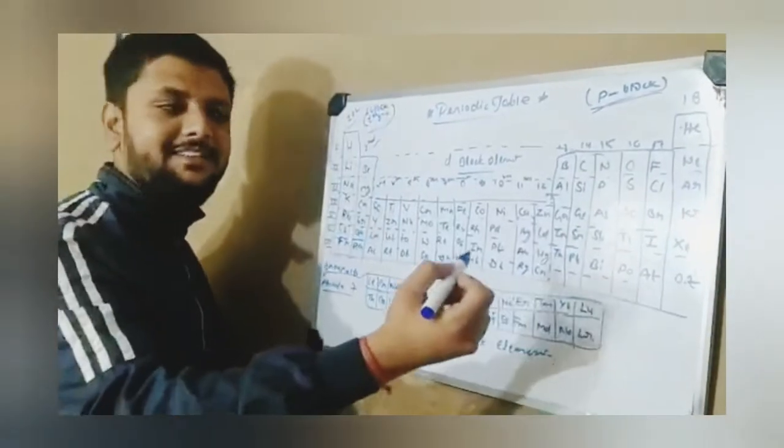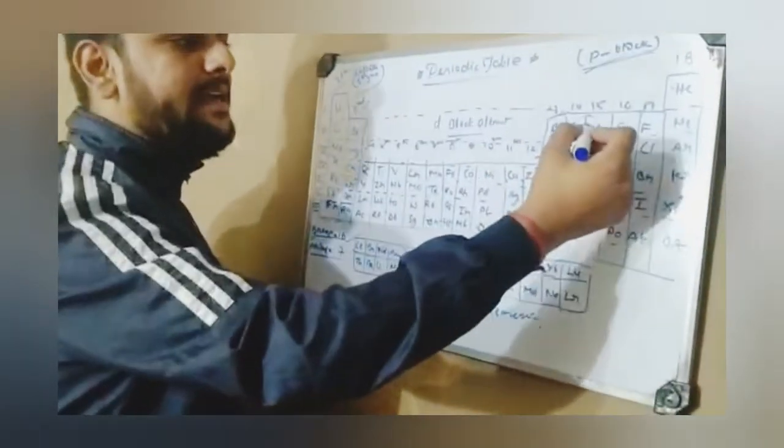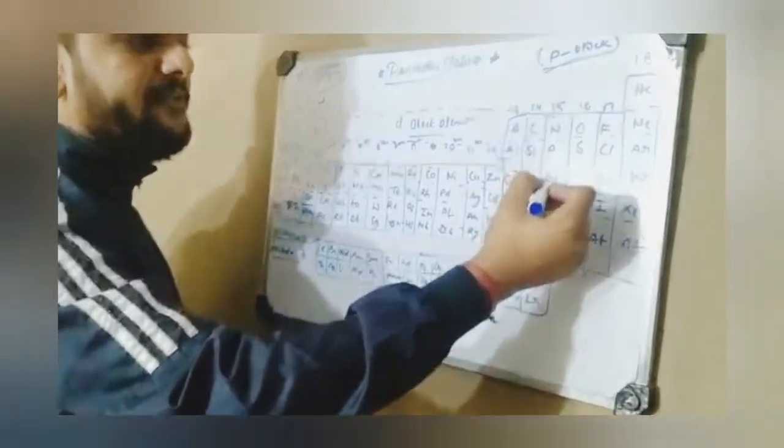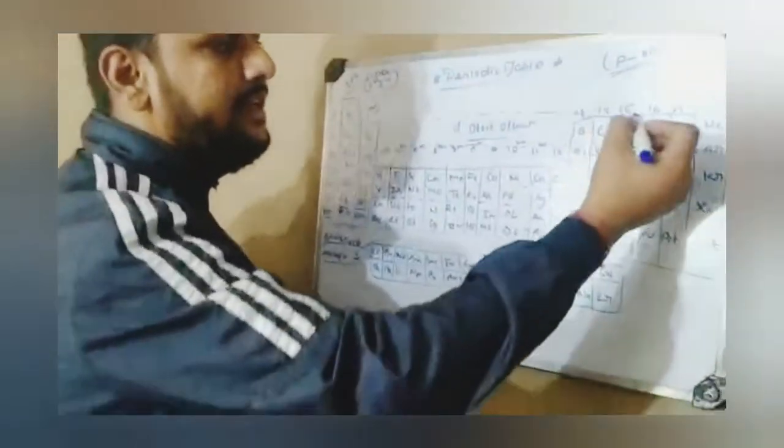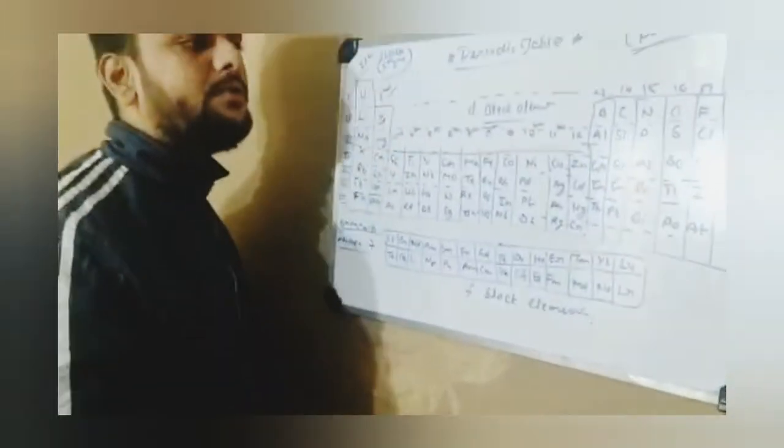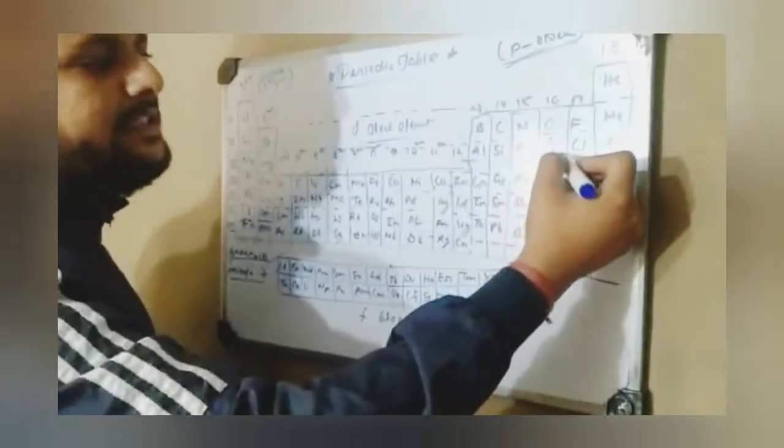Group 15 elements: Nitrogen, Phosphorus, Arsenic, Antimony, Bismuth. Now group 16 elements.